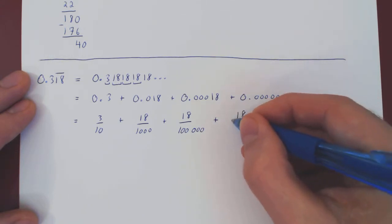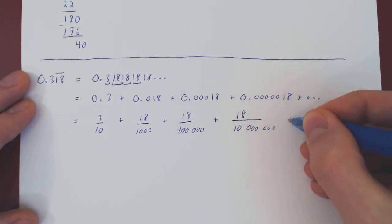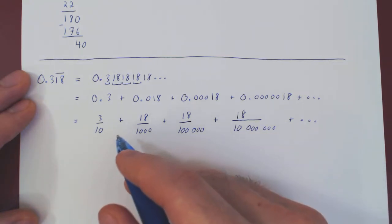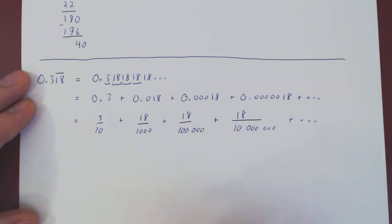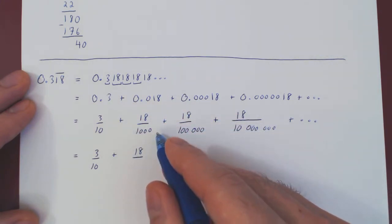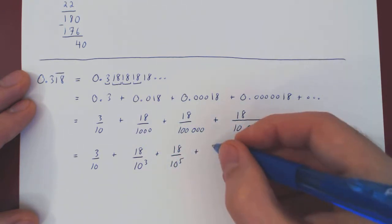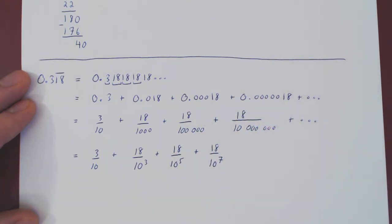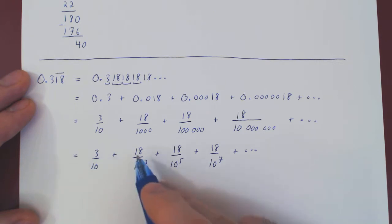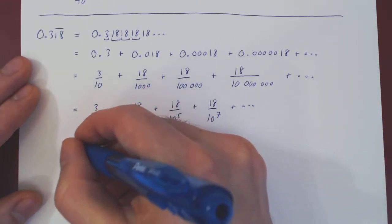The next term, 0.0000018, is 18 over 10 million, and so forth. This may look bad, but it becomes much more pleasant if we rewrite our denominators as powers of 10: 1,000 is 10 cubed, 100,000 is 10 to the 5, 10,000,000 is 10 to the 7, and so forth. We can hopefully now see a pattern. The 3 over 10 is distinct from the rest of the sum, so we'll leave it alone and combine the rest into a single series.